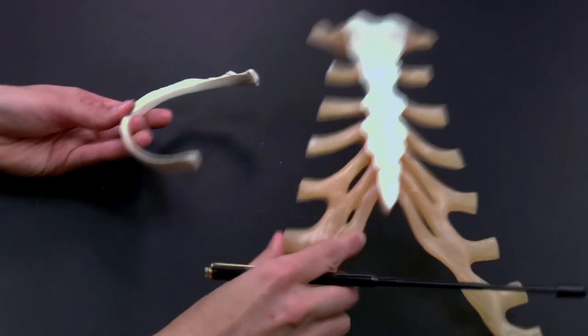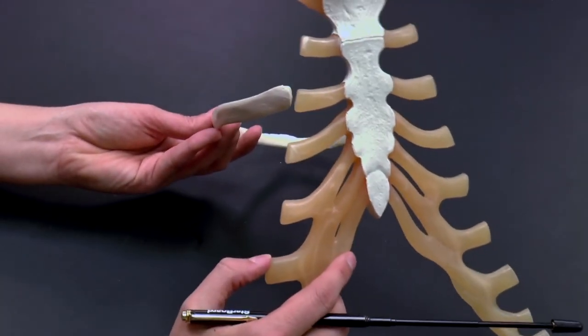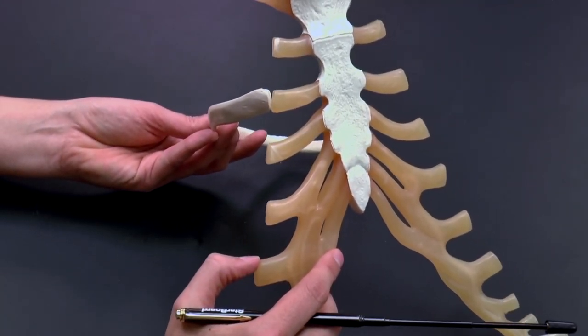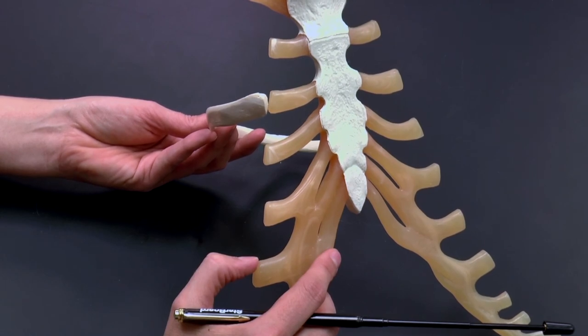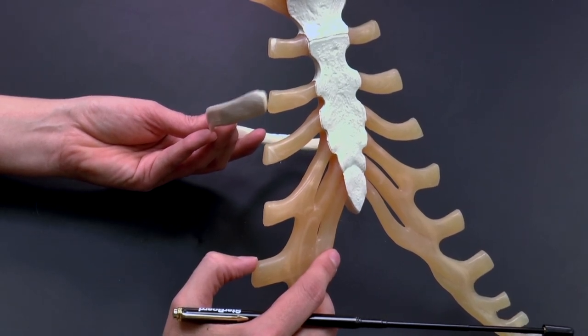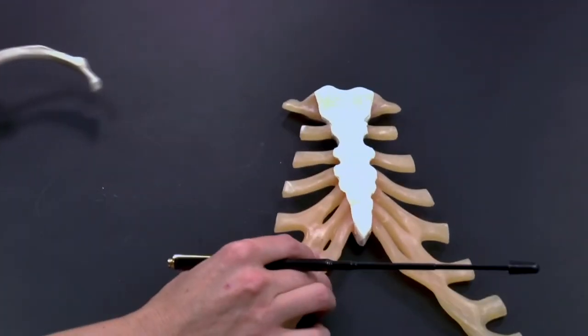This anterior portion would attach to a costal cartilage and you can see how it would circle around the body and form the thoracic cage. I'll see you soon.